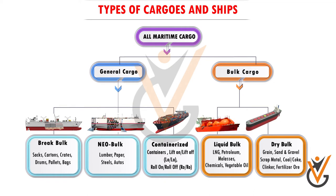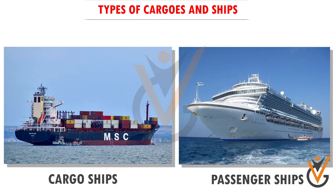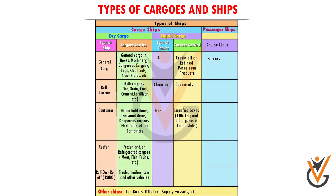The cargoes involved in each of the subcategories are detailed in the table below. In modern sea transportation systems, certain break bulk, neo-bulk, and liquid cargoes in drums are also transported as containerized cargoes. There are two major categories of ships: cargo ships and passenger ships. Cargo ships are further sub-divided into dry cargo and wet cargo.